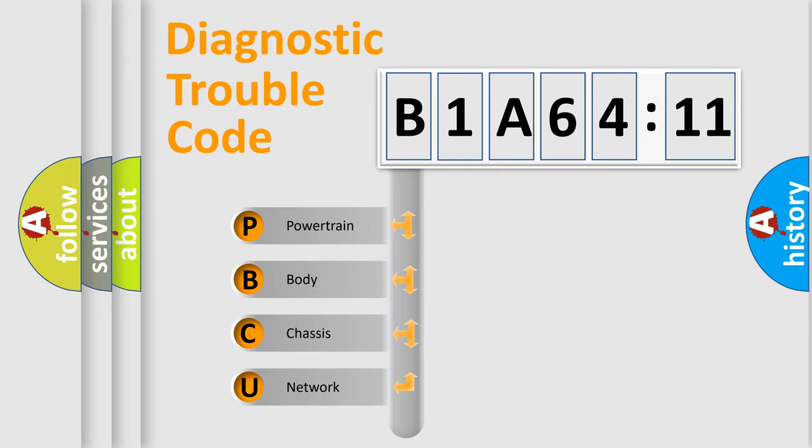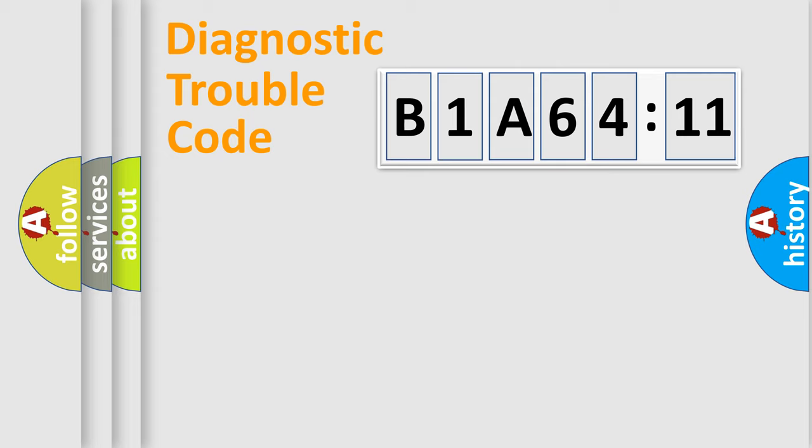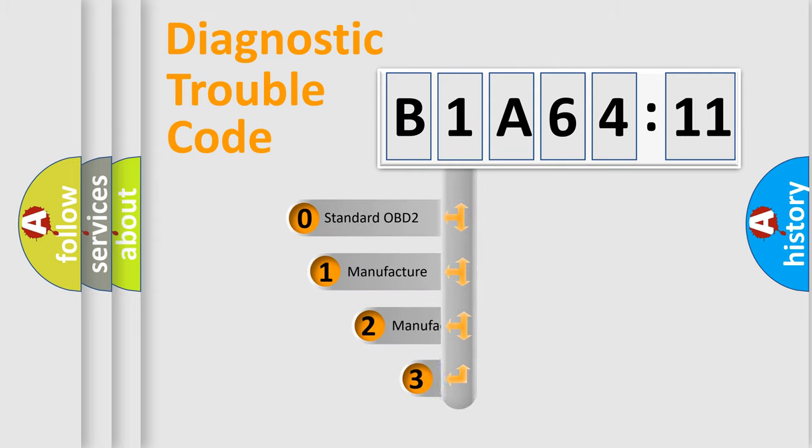We divide the electric system of the automobile into four basic units: Powertrain, Body, Chassis, and Network. This distribution is defined in the first character of the code.